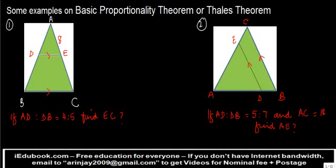So let's look at the first one. You have triangle ABC and you are told that if AD is to DB is 4 is to 5. Now we don't know what is the length of AD. We don't know what is the length of DB. What we are told is that the ratio of these two is equal to 4 is to 5. And what we also know is that the figure tells you that DE is parallel to BC.